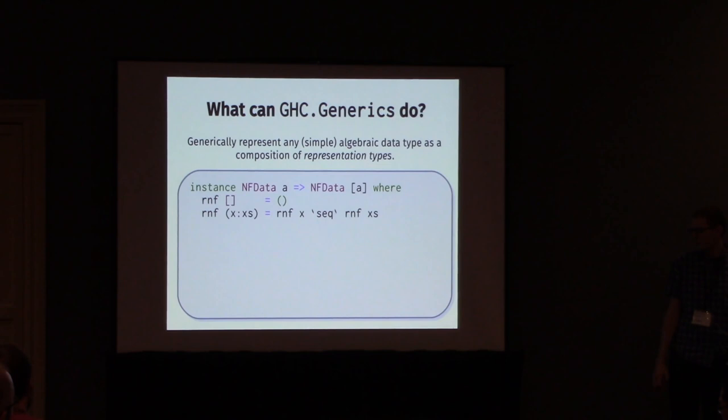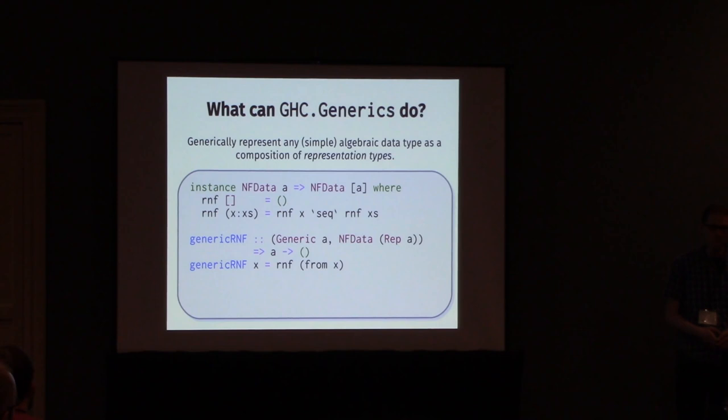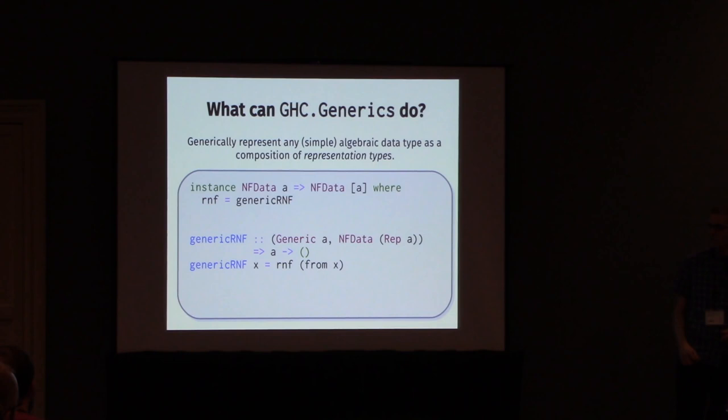With those instances, instead of having to write the code we saw earlier, we can write once and for all the rnf function that works over anything that's an instance of Generic. To make that work, all you have to do is just take the thing, convert it to its representation type, and then fully evaluate that. And that's the algorithm. So now we can take all the code in the instance above and just swap that out with rnf equals genericRnf. That exact line of code works in a lot of different situations - it works for booleans, maybes, eithers, pretty much any data type under the sun.